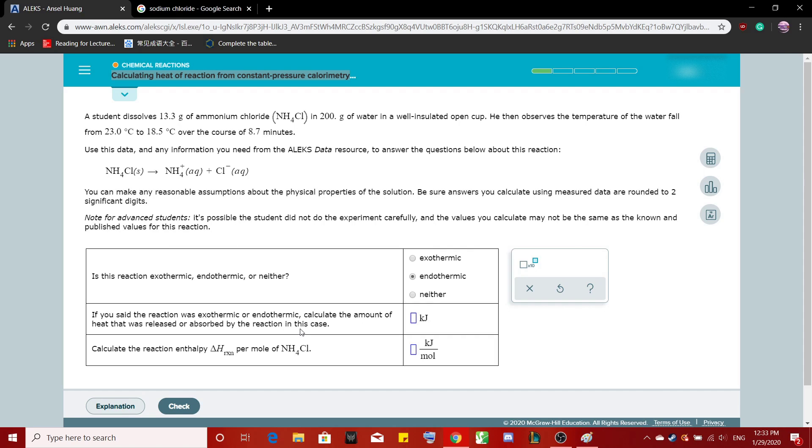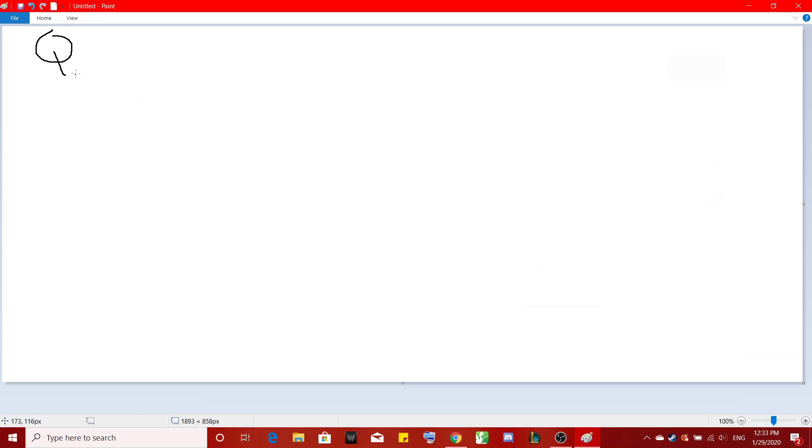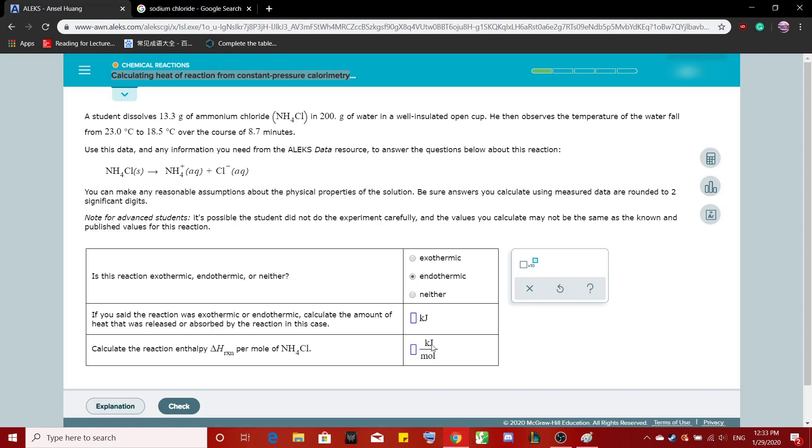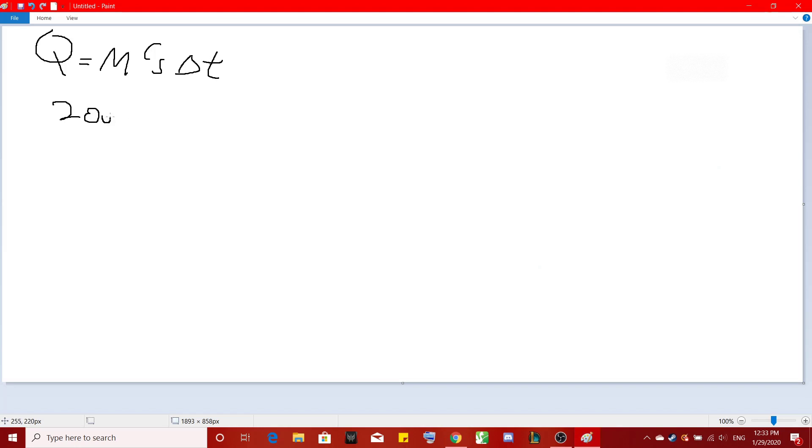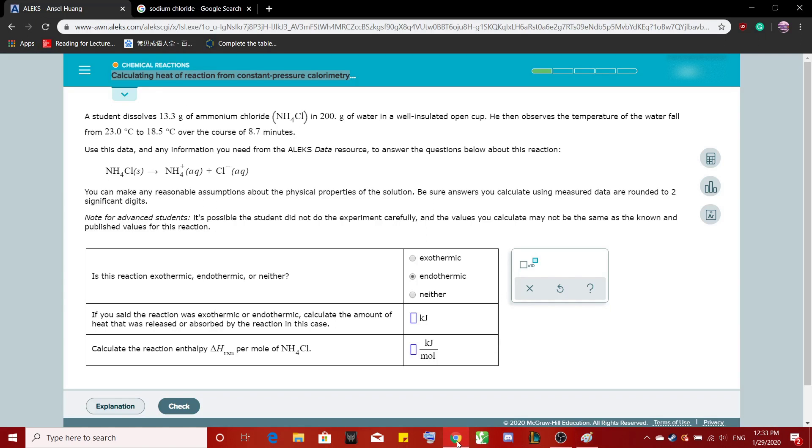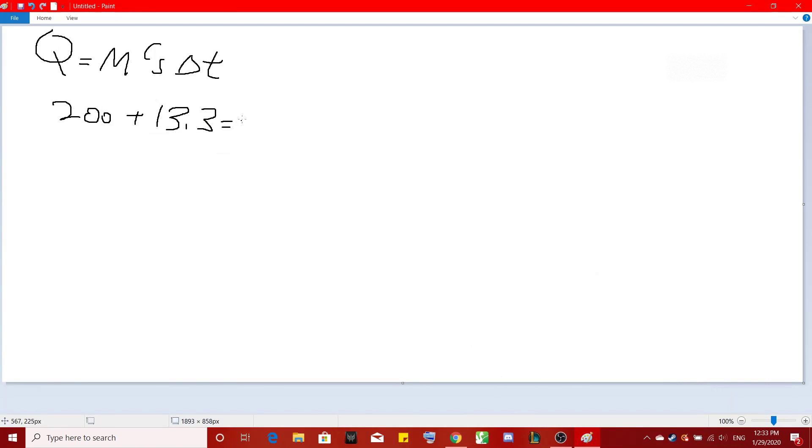And then the M, mass, okay, so we're given 200 grams of water. So 200 grams of water and 13.3 grams of ammonium chloride. So that's 200 plus 13.3, right? And that's going to give us our M value, 213.3.